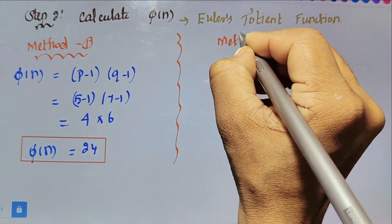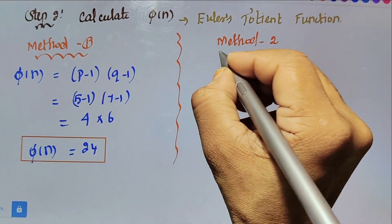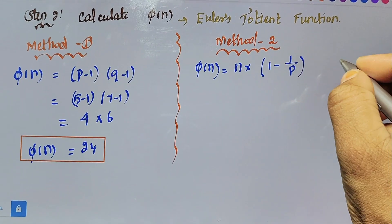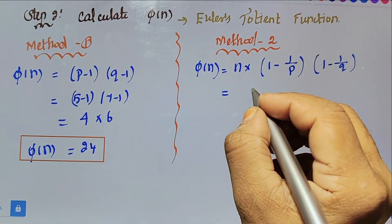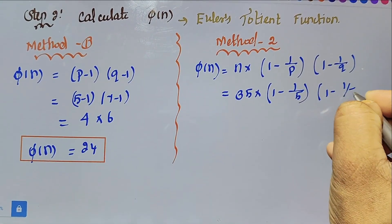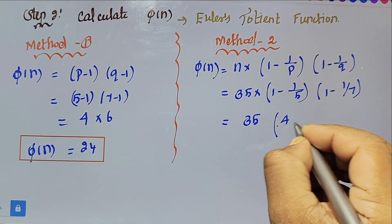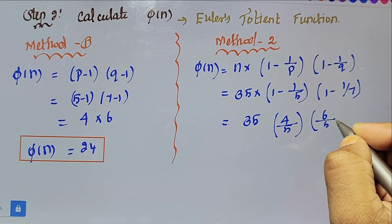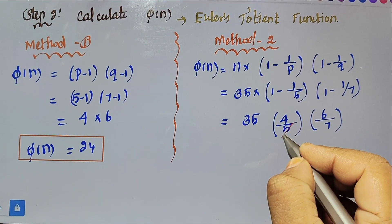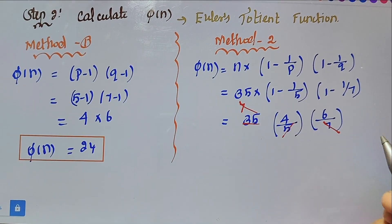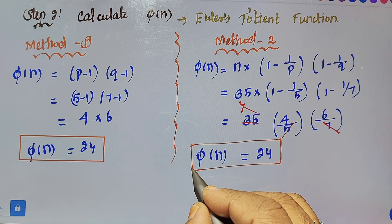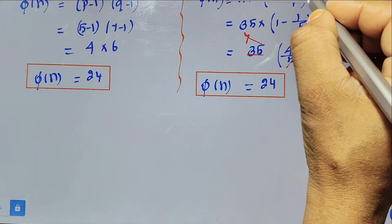Method 2: phi of n equal to n into (1 minus 1/p) into (1 minus 1/q). Substituting n equal to 35, (1 minus 1/5) and (1 minus 1/7) gives 35 into (4/5) into (6/7). Cancelling common factors, the answer is again phi of n equal to 24. Both methods give the same answer; choose whichever is easier.